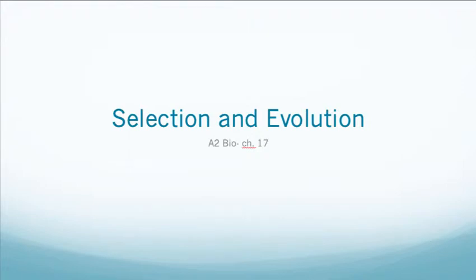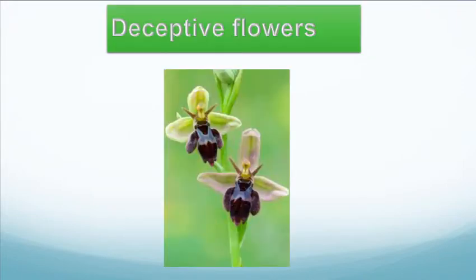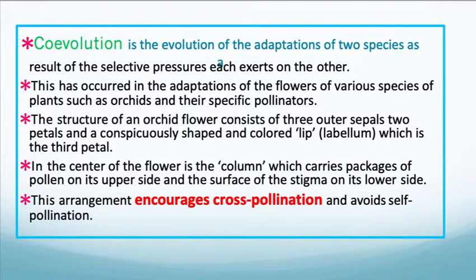Hello and welcome to Selection and Evolution Chapter 17. We're going to talk about co-evolution, specifically with the bee orchid and their pollinator. Co-evolution is the evolution of the adaptations of two species that are the result of the selective pressures that each is exerting on the other.